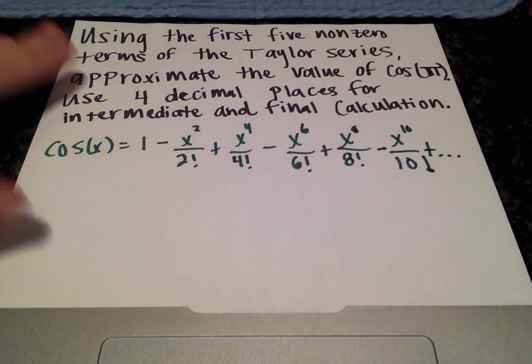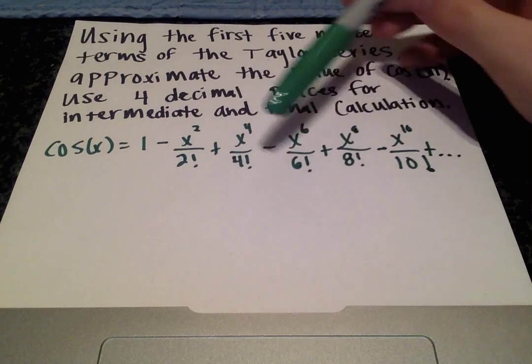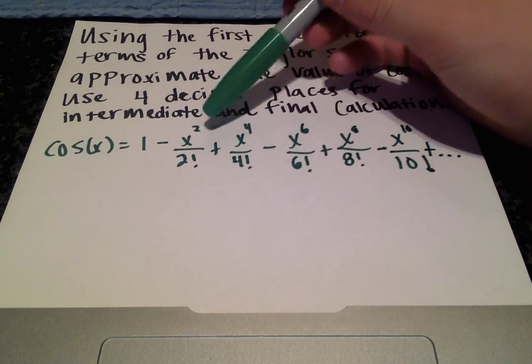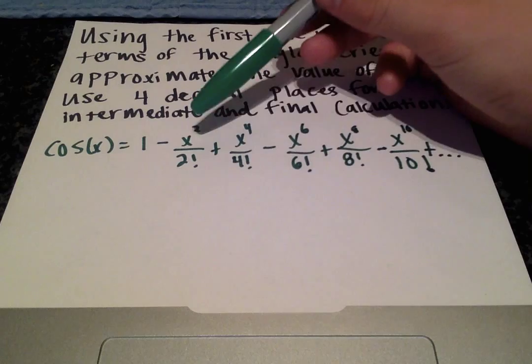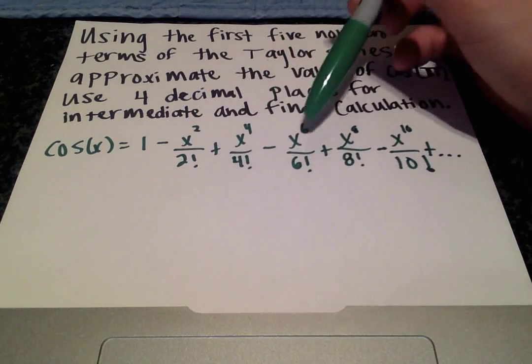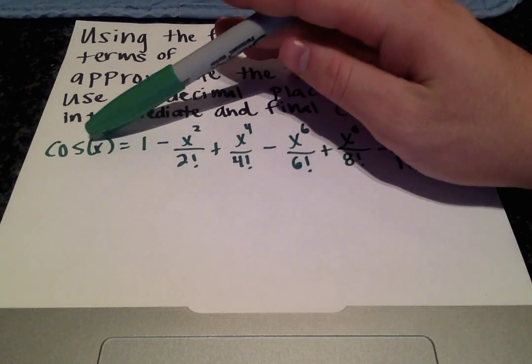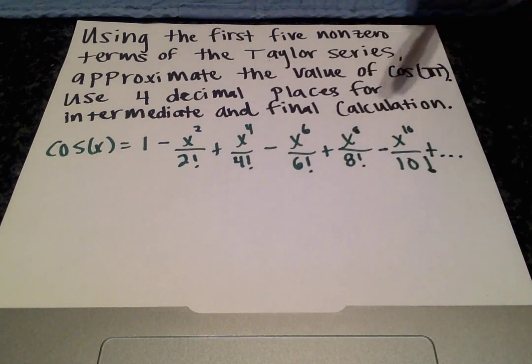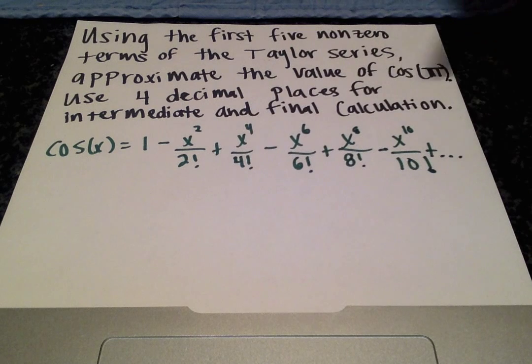And keep this going, changing the sign, increasing the power by 2 each time, and notice that the power and the factorial in the denominator will be the same: 2 and 2, 4 and 4, 6 and 6. These are even values, starting with 1, changing the sign each time.